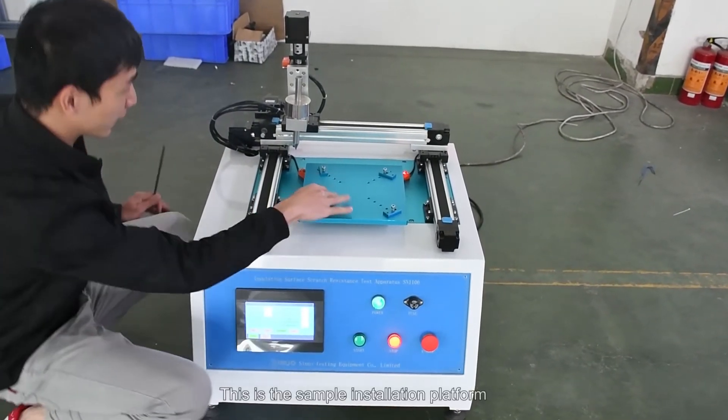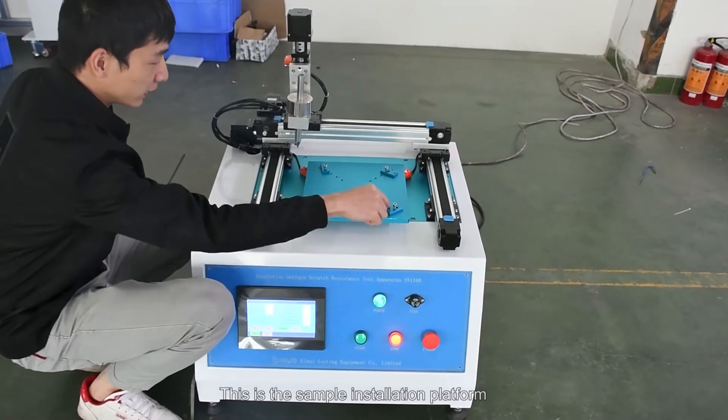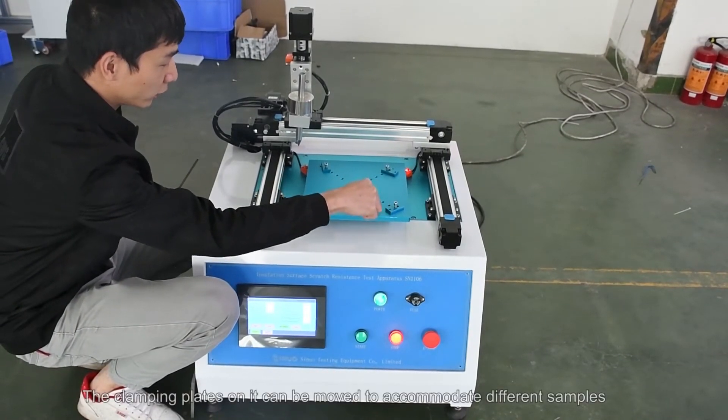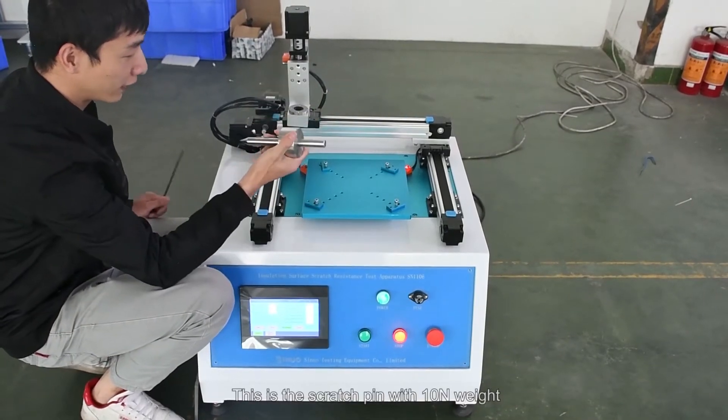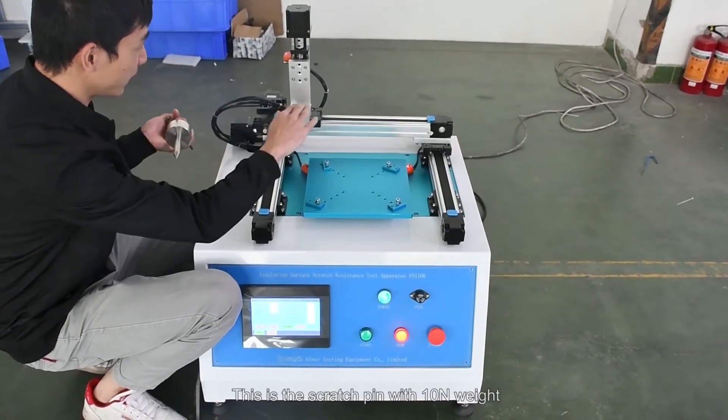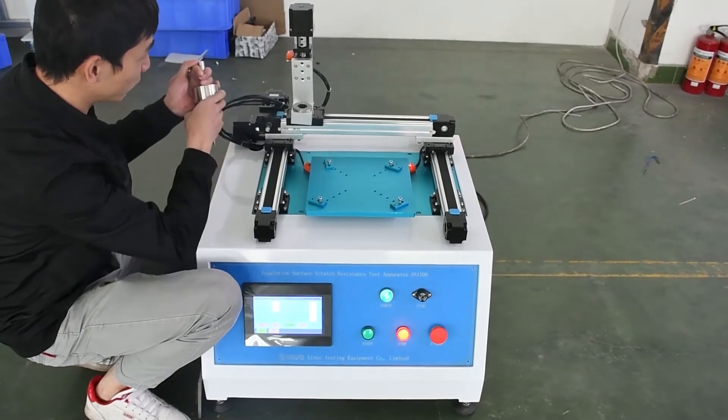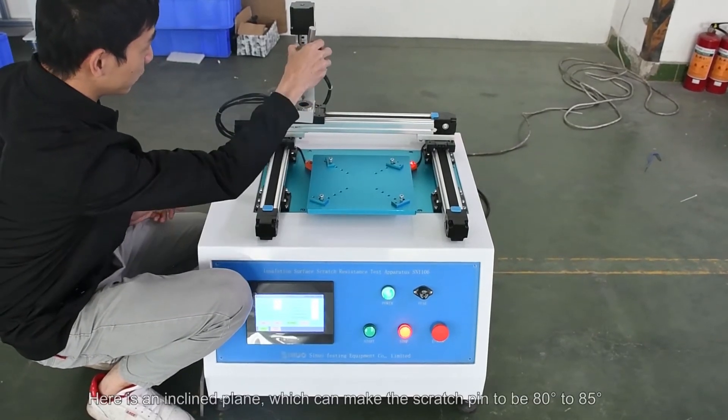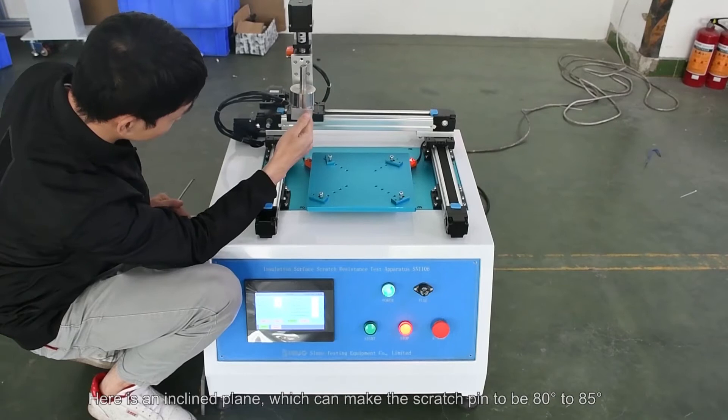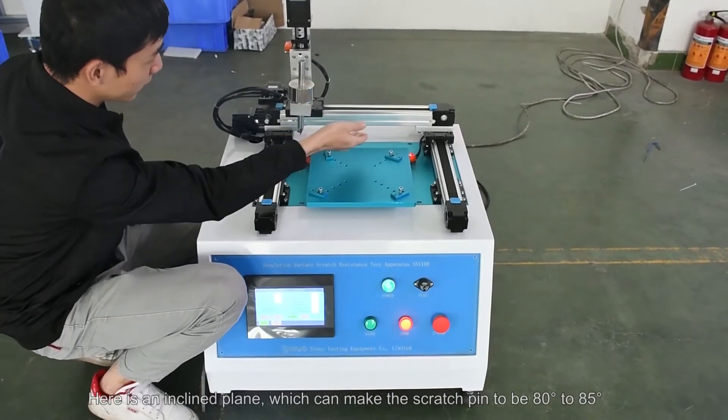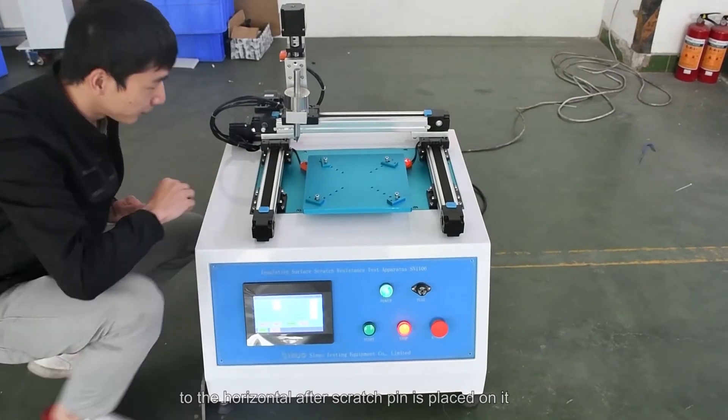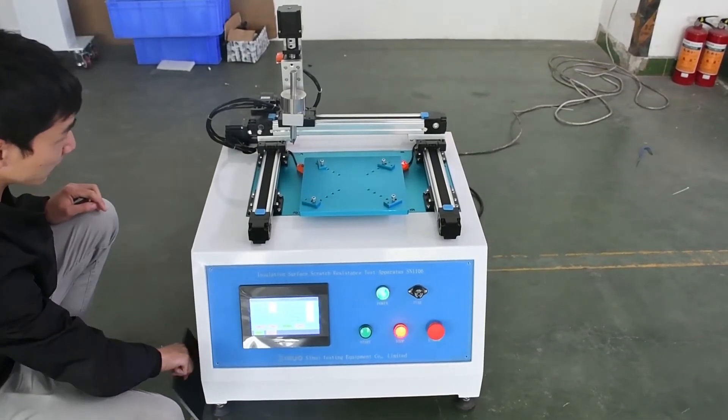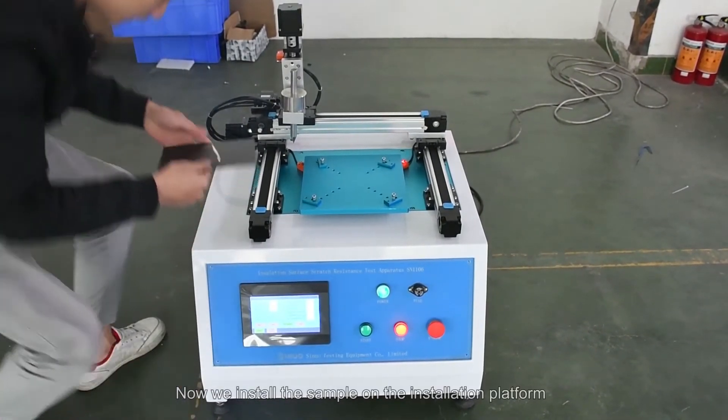This is the sample installation platform. The clamping plates on it can be moved to accommodate different samples. This is the scratch pin with 10N weight. Here is an inclined plane which can make the scratch pin to be 80 degrees to 85 degrees to the horizontal after scratch pin is placed on it.